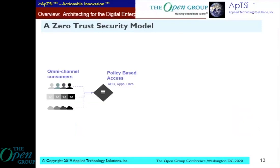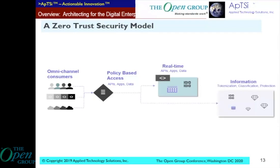So what does a zero trust world and enterprise look like? It's an omni-channel-based platform with policy-based access and real-time APIs and data. There could be different communication patterns — APIs, event-based, near real-time — but there is almost direct interaction between producer and consumer, because you can't predict who the consumer is going to be. There's a need to protect data in flight and at rest — tokenization, encryption, format-preserving encryption, classification, and data protection models all come together to define that future.